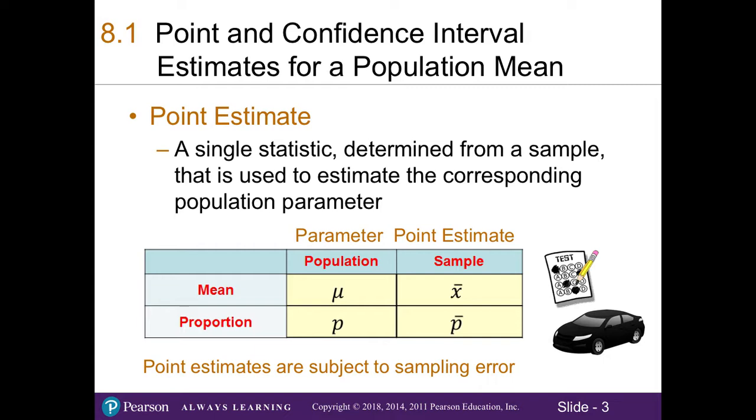Now recall in Chapter 7 that we learned about sampling error, in that our statistic from a sample is subject to sampling error, because it will not be the exact same value as our population parameter. So that concept is carried into this chapter as well.